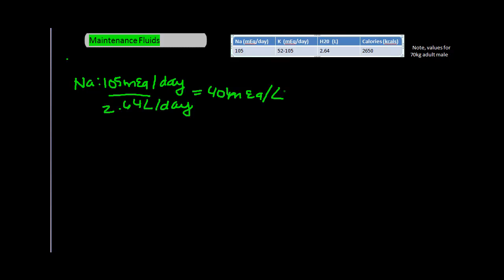So, this is a lot of fancy math, but what this essentially means is that, at minimum, you need to give 2.64 one liter bags of 40 mEq of sodium per liter concentration to cover the entire 105 mEq sodium per day need. Now, similarly, do the same thing for potassium.